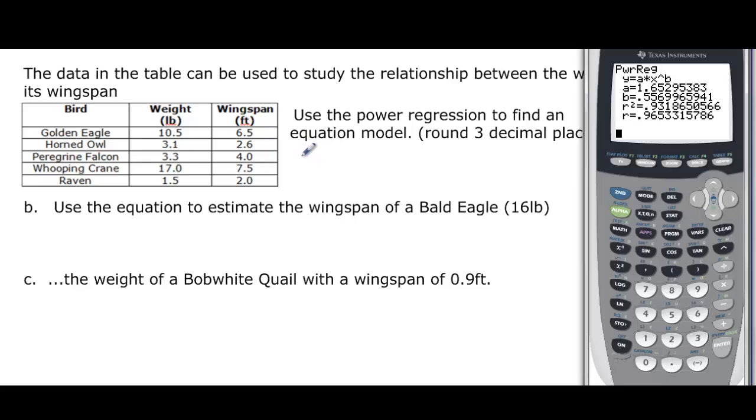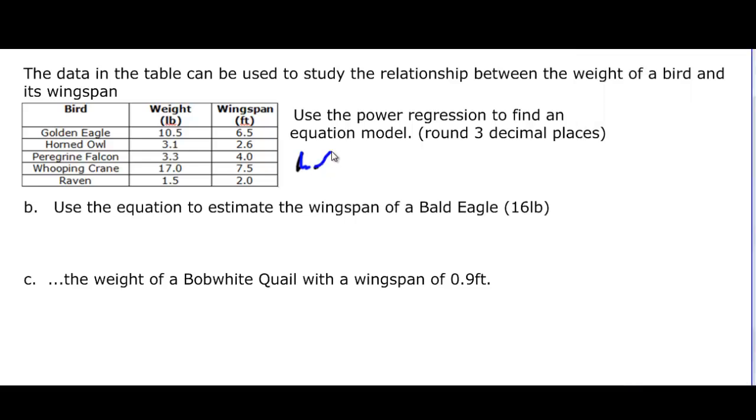And notice it's A times X to the B. So A is, and it's set to three decimal places, 1.653, and then it's going to be 0.557. So 1.653 times X, we'll put that in parentheses, and it was 0.557. We stopped and rewrote that so it looks a little nicer so we can use it easier.